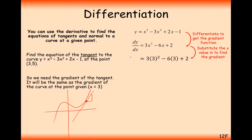Now we move from the differential to working out the gradient. So m equals 3 times 3 squared minus 6 times 3 plus 2. Simplifying this, we get 11. So the gradient at x equals 3 is 11.